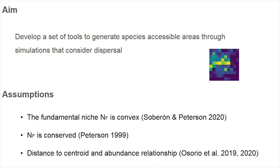All simulations have three important assumptions. First, the fundamental niche is an ellipse or an ellipsoid, so it has a convex shape. Second, this fundamental niche doesn't change during the simulation — the fundamental niche is conserved, and generally that's the case. Third, there is a positive relationship between proximity to the center of the niche and the abundance of the populations that inhabit those sites close to the center.